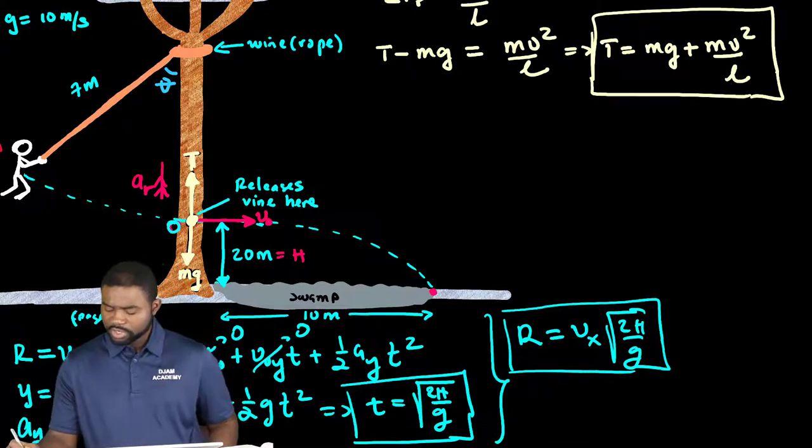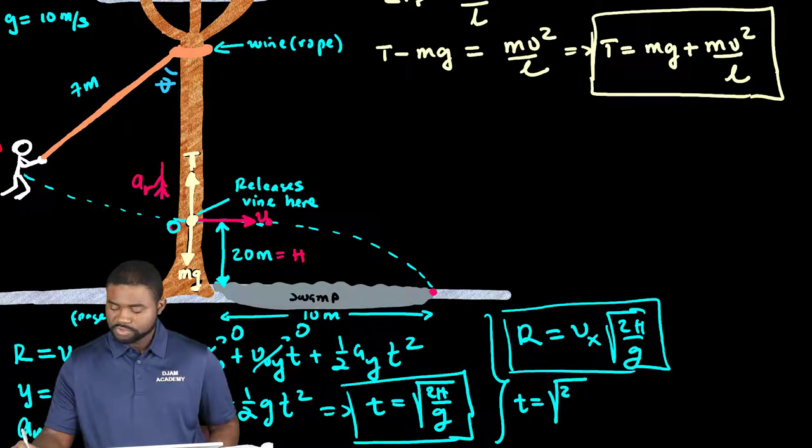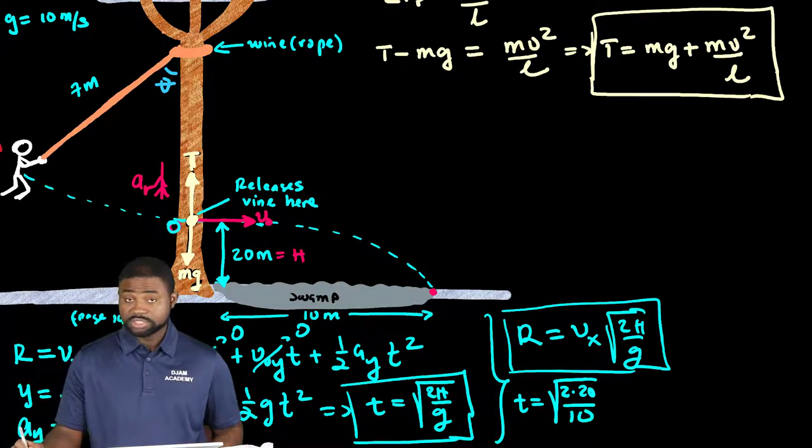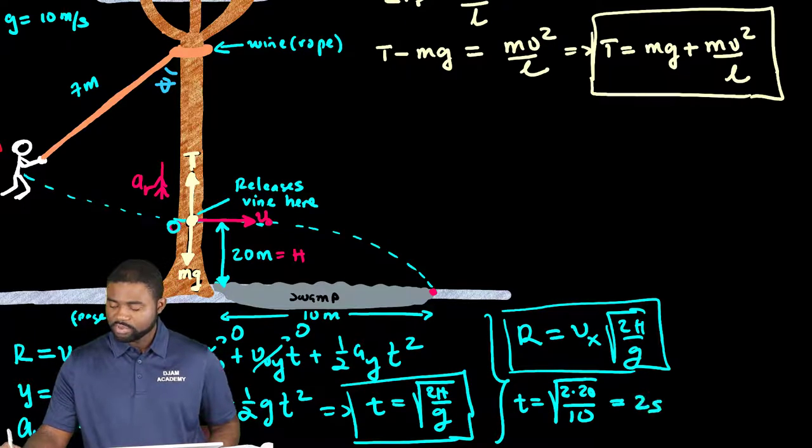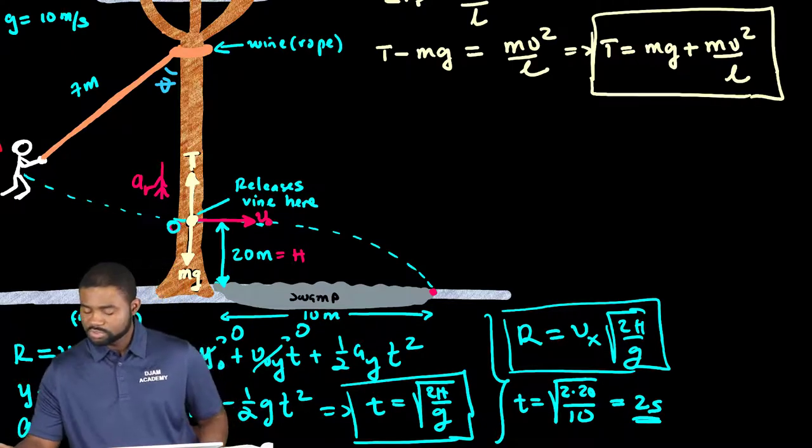So we can actually calculate the value of t. t is equal to the square root of 2 multiplied by h is 20 divided by, I'm going to take g as 10 just to simplify things. So we have t here equal to 2 seconds.